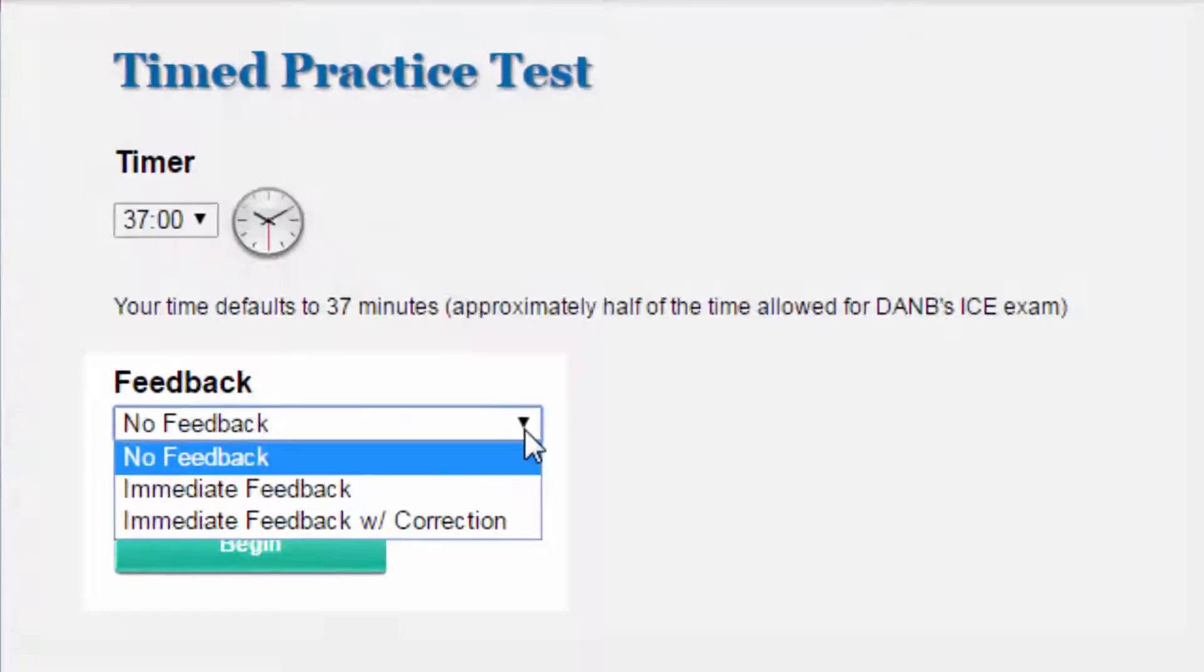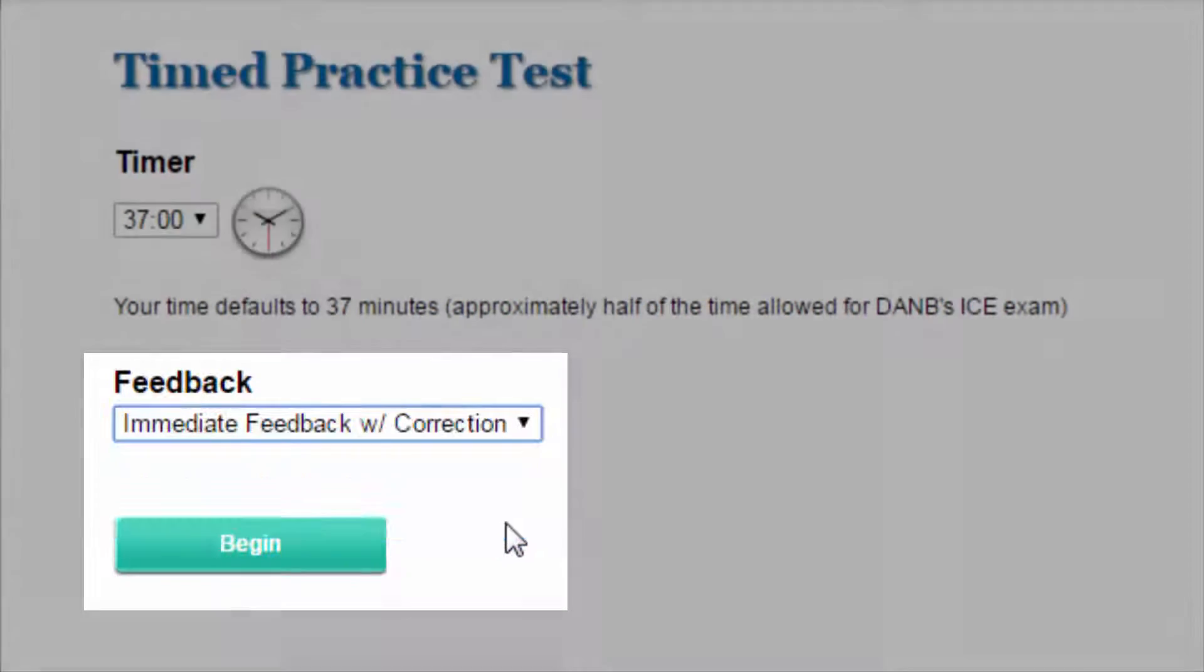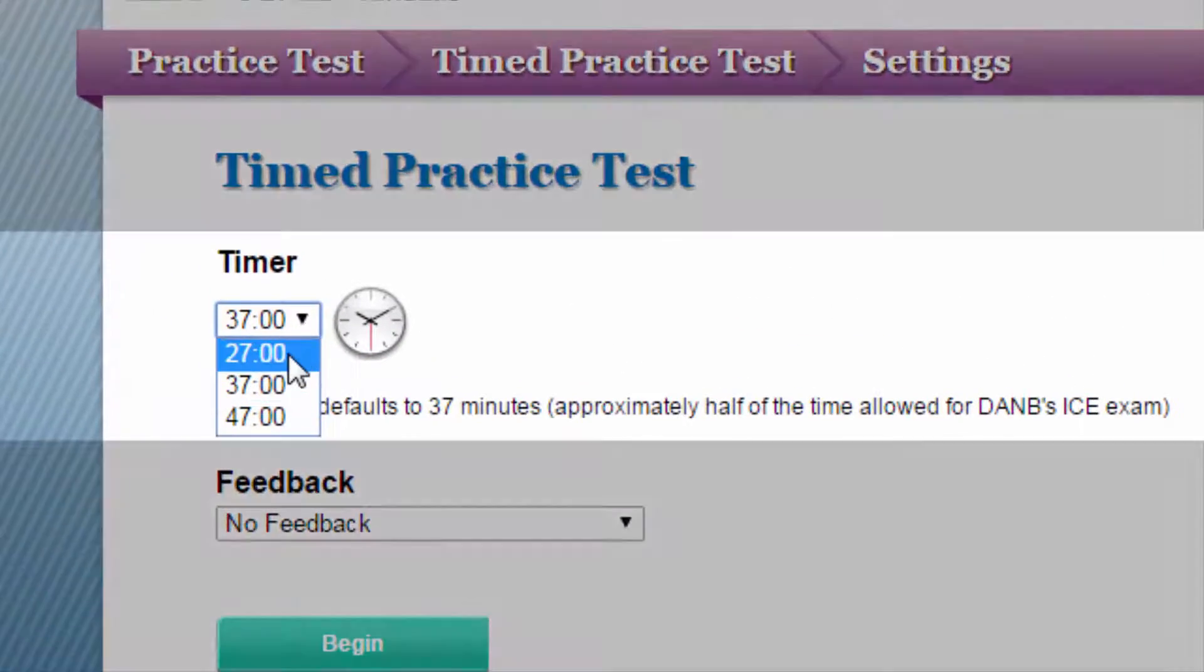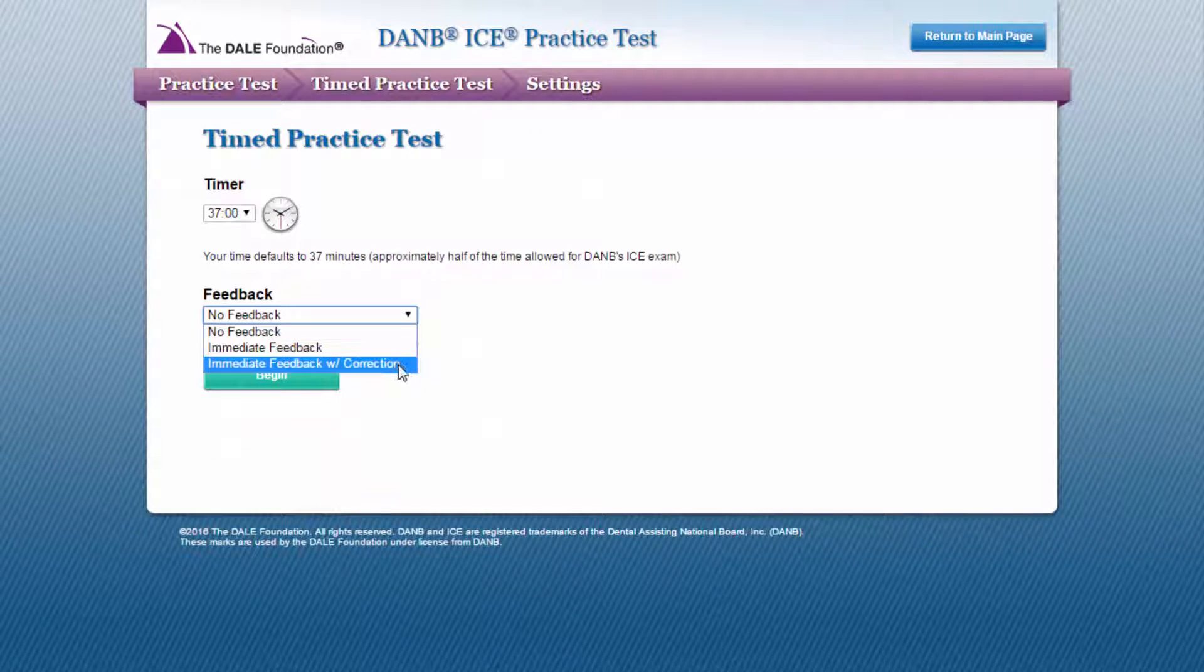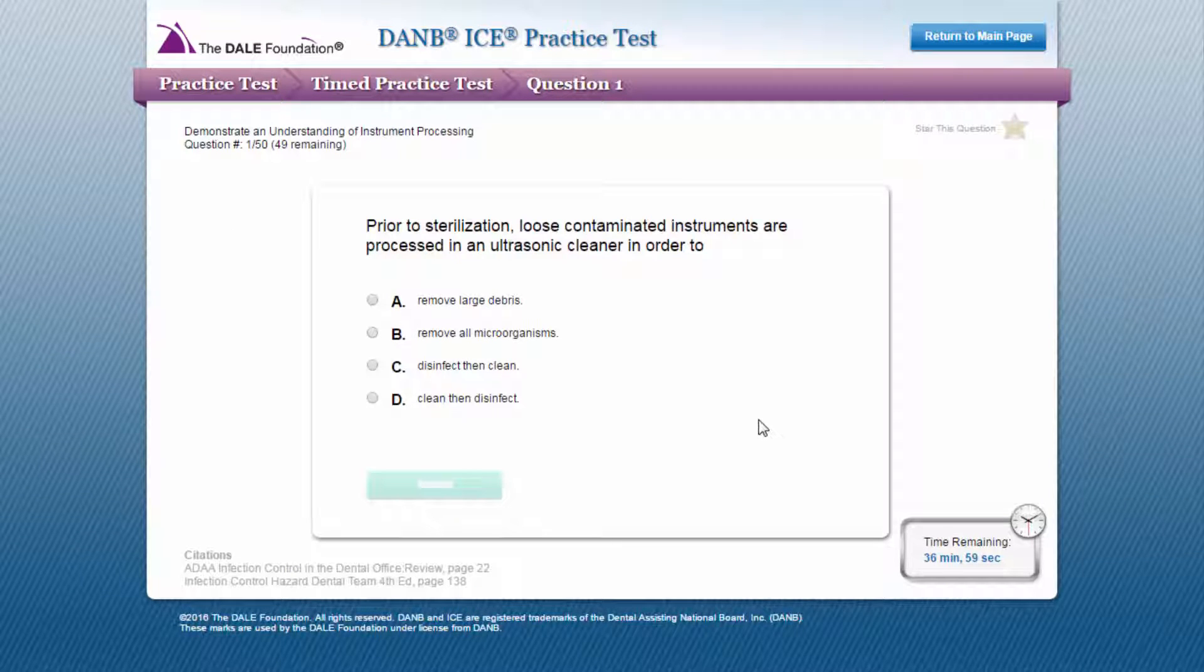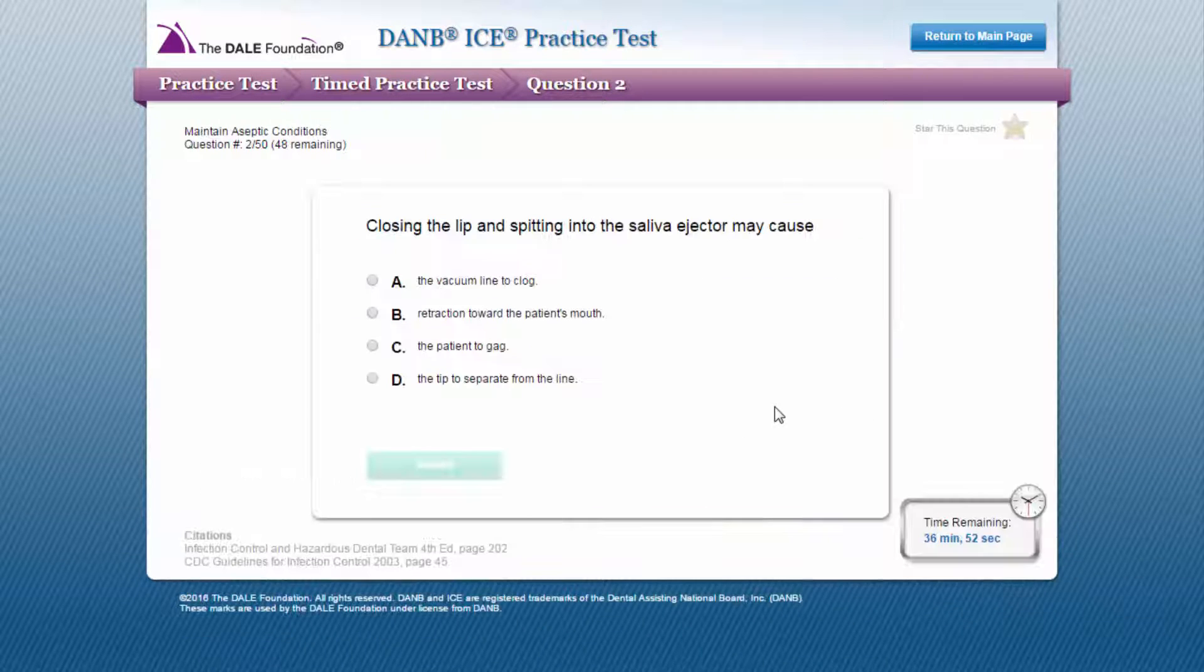Then you can set the timer and select the way you want to receive feedback. The timer will provide you with 37 minutes to take one 50-question practice test selected from the 200-question item bank, which is approximately half of the 75-minute time allotted for the 100-question DANB ICE exam. This is the default time setting, which can also be adjusted to 27 minutes or 47 minutes.